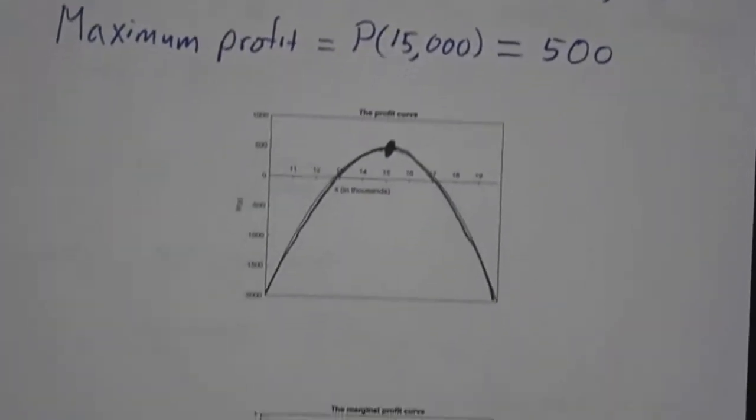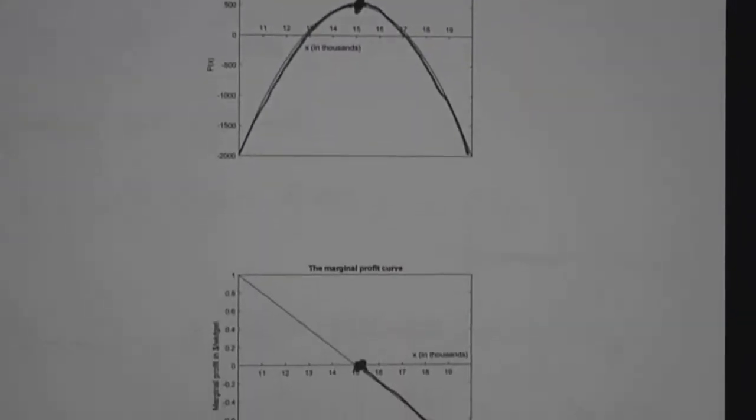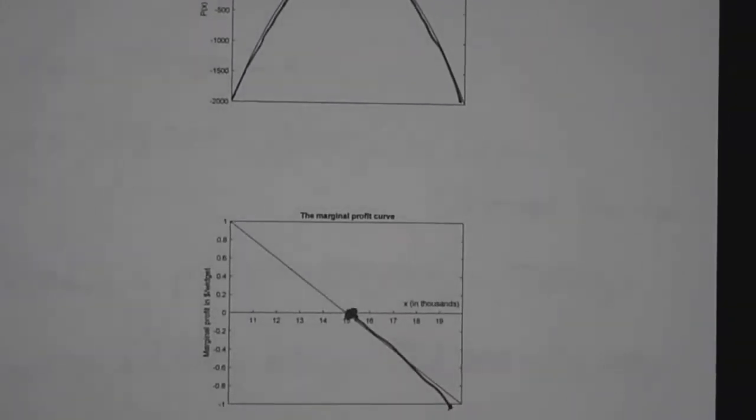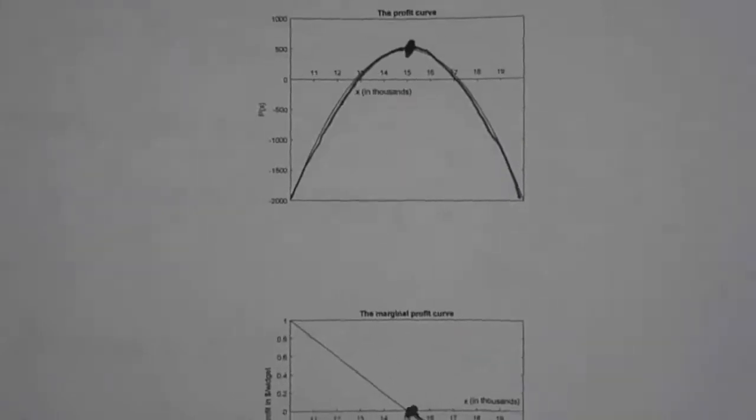So by looking at places where the marginal profit is 0, you can optimize your production. And in this case, you can save the factory. There's a hitch, though.